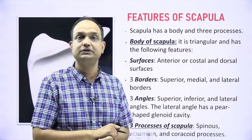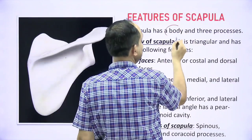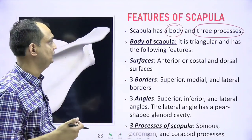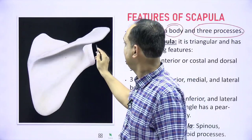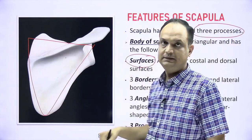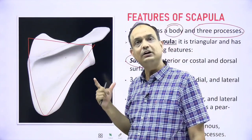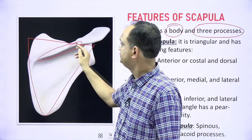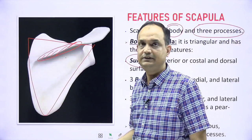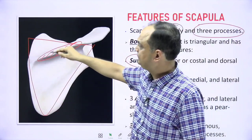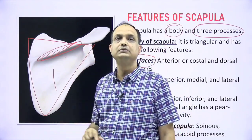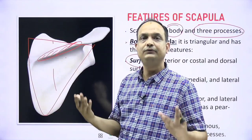Now the important features of the scapula: the scapula has a body and three processes. The body of the scapula is triangular and has two surfaces. The dorsal surface is identified by the spinous process — which is always a feature of the posterior or dorsal surface. The surface facing anteriorly towards the ribcage is known as the ventral surface or costal surface of the scapula.